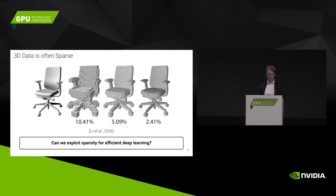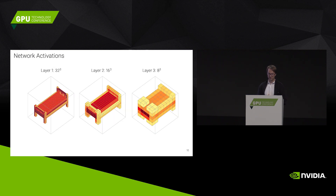So it really makes no sense to waste a lot of operations in areas where there is no information in the input. The question is: can we exploit the sparsity properties for efficient deep learning?